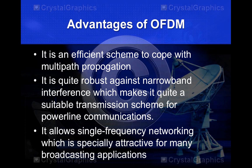Moving on to the advantages: OFDM is an efficient scheme to cope with multipath propagation. It is quite robust against narrowband interference, making it a suitable transmission scheme for power line communications, which have a lot of narrowband interference. It also allows single frequency networking, which is especially attractive for many broadcasting applications.